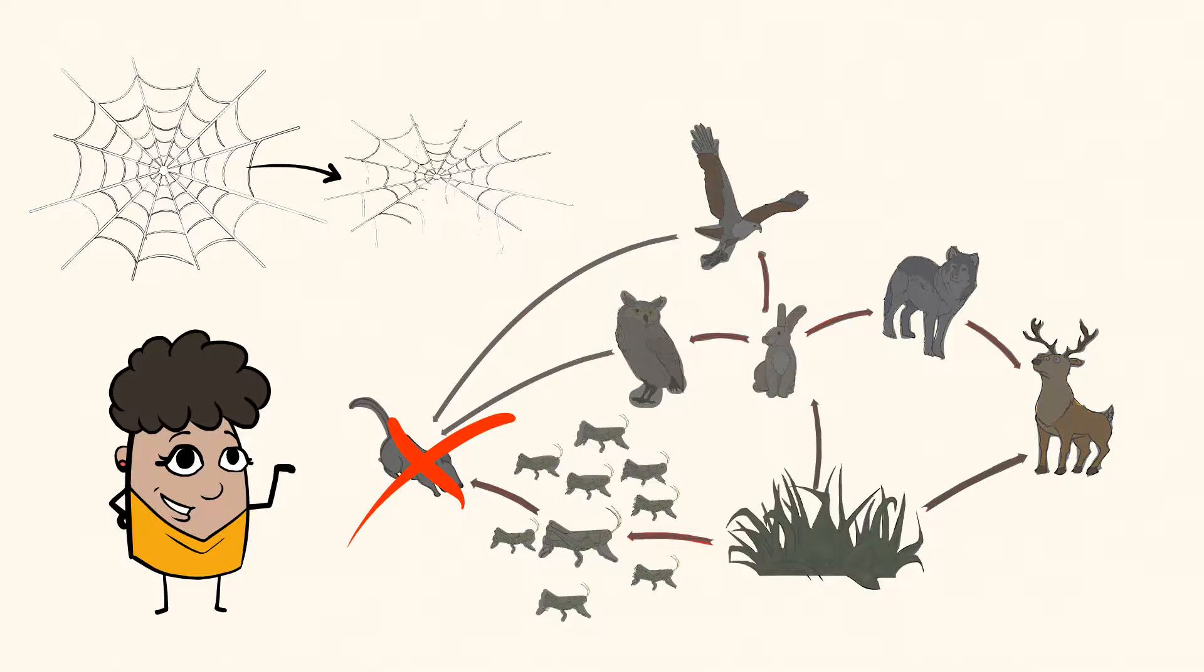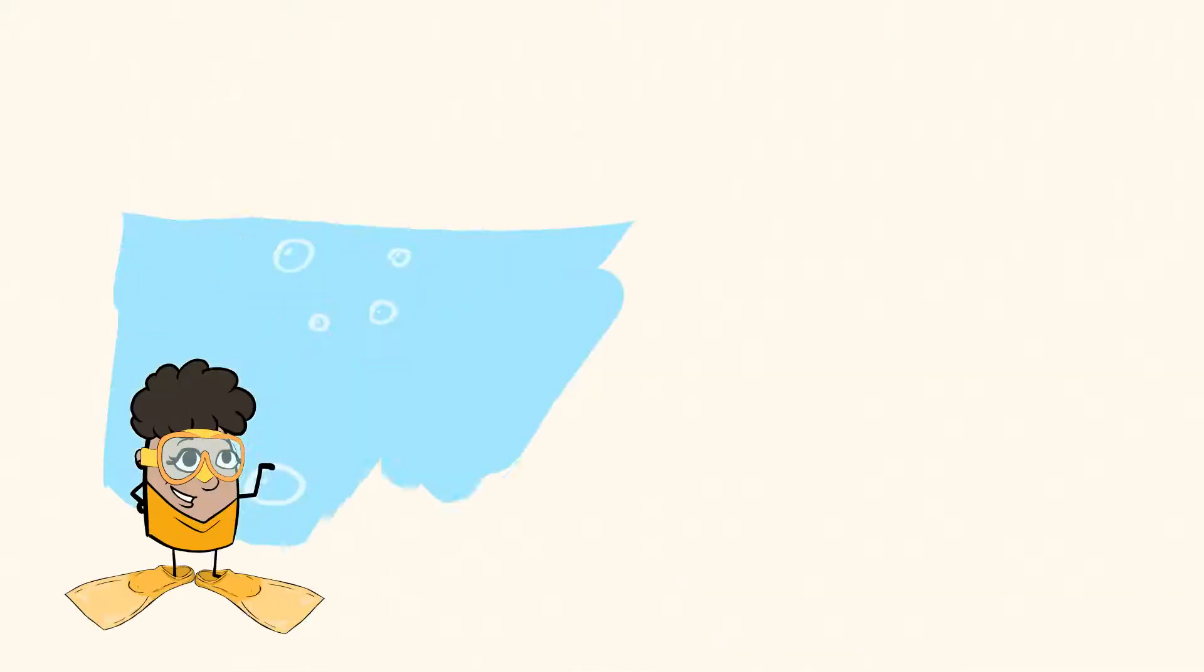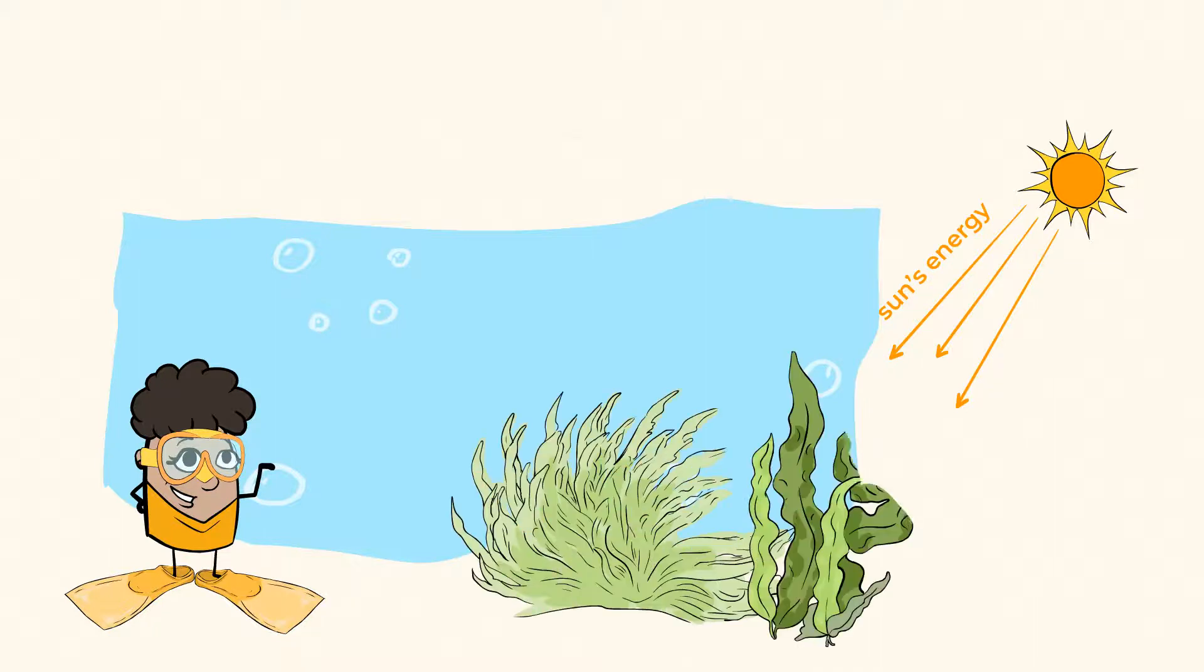And this is true of any food web. Put on your scuba gear because we are headed to the ocean to look at another example. The sun is once again the beginning of this food web. In the ocean, plants look a little different, like algae and seaweed.